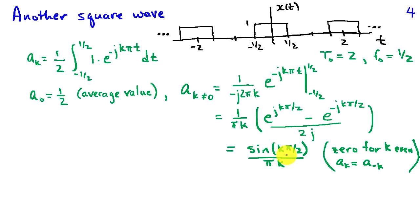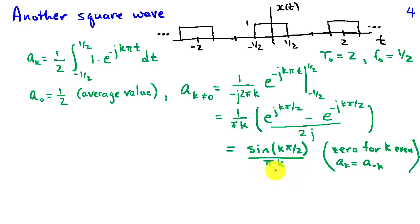The sine of any integer multiple of pi is exactly zero, so if k is even, a_k is exactly zero. Additionally, since the sine in the numerator is an odd function of k — changing k to minus k changes the sign — and the denominator also changes sign, these two sign changes cancel, so a_k is an even function of k: that is, a_k equals a sub minus k.